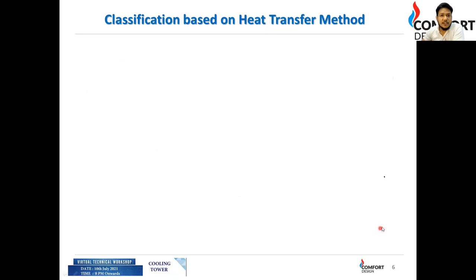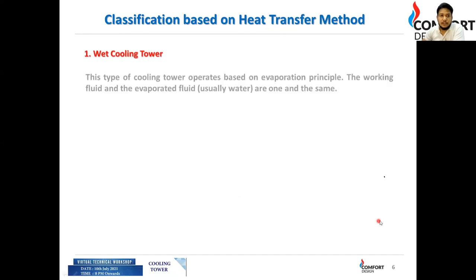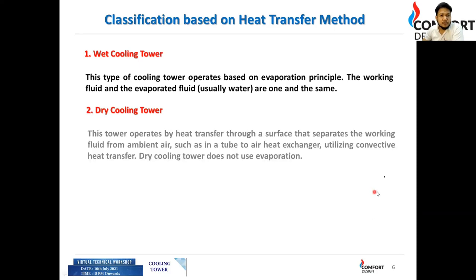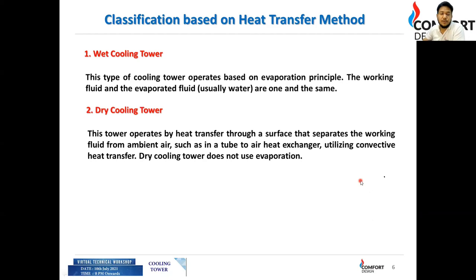Moving to classification based on heat transfer method: a wet cooling tower operates based on the evaporation principle — water is evaporated and heat transfer occurs through that. A dry cooling tower operates by heat transfer through a surface separating the working fluid and ambient air, such as in a tube-and-air heat exchanger. It uses convective heat transfer and does not use evaporation.